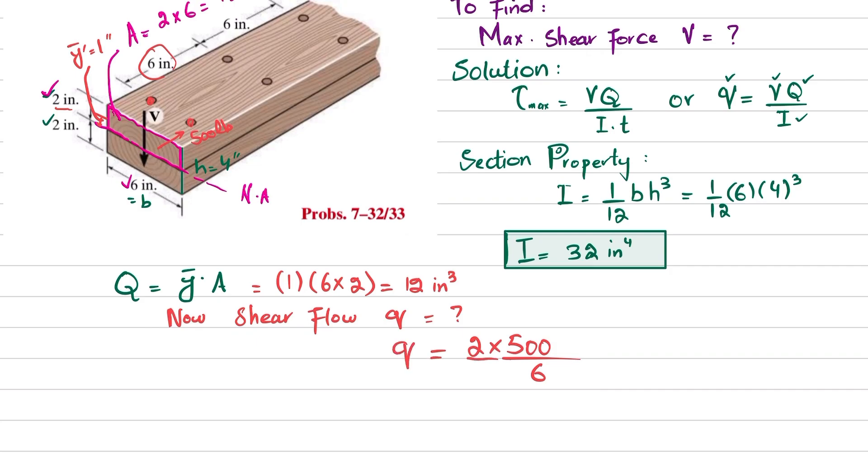When this horizontal shear force is divided by this distance, which is 500 divided by 6, and there are two rows, this will give you shear flow q, which is the horizontal shear force per unit length.